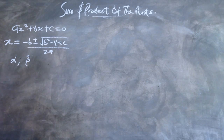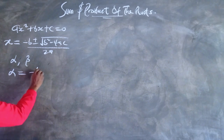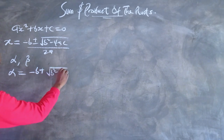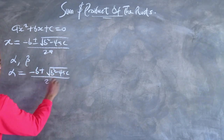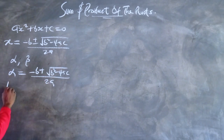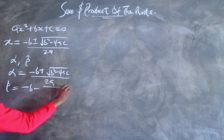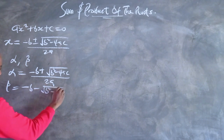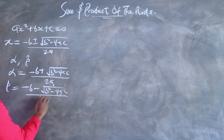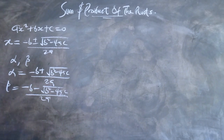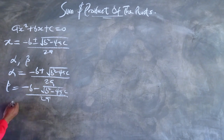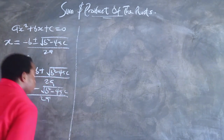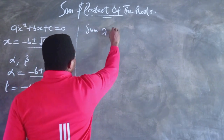Alpha and beta are used to represent the roots of a quadratic equation — this is the most common representation. So alpha = (-b + √(b² - 4ac)) / 2a, and beta = (-b - √(b² - 4ac)) / 2a. In this lesson, we will see how to derive formulas for the sum and product of the roots.